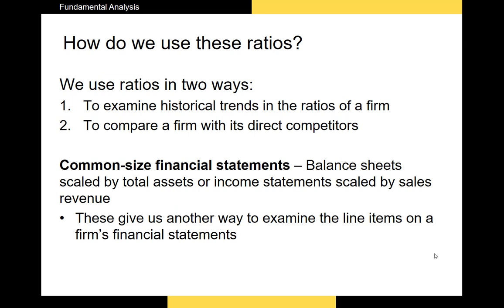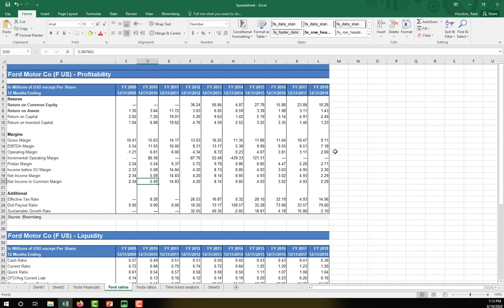We use these ratios in a couple of ways: time trend analysis compares a firm's ratios to its own historical values, and peer group analysis compares a firm's ratios to those of direct competitors. A third method is common size financial statements, where all balance sheet line items are scaled by total assets and all income statement line items are scaled by sales revenue, allowing comparison of firms' line items with one another or across time.